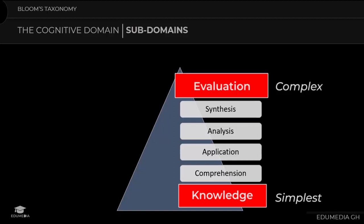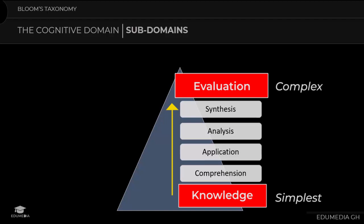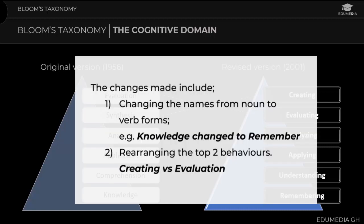These categories can be thought of as degrees of difficulty — the first ones must normally be mastered before the next can take place. When setting an objective for a learner, you'd start by testing knowledge before moving to evaluation. This version of the cognitive domain was published in 1956. In 2001, a revised version by Lorin Anderson and David Krathwohl was released, changing the names from nouns to verbs — for example, 'knowledge' became 'remembering' — and rearranging the top two behaviors: creating and evaluating.